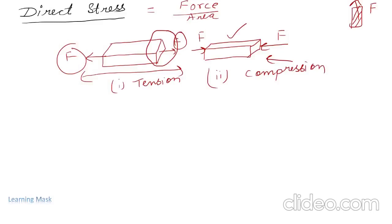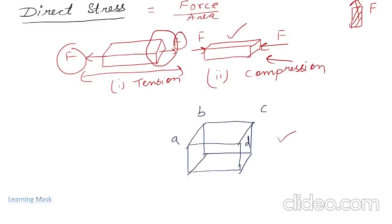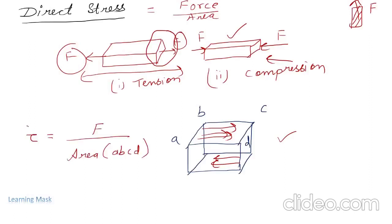Now we will talk about the third case, which is called shear. Suppose this is our surface and if the force acts parallel to the cross-sectional area, then this force will develop a stress known as shear stress. The force which acts parallel to the surface is known as shear force. We define shear stress using symbol tau as shear force per unit area — that is the cross-section where the shear force is acting.